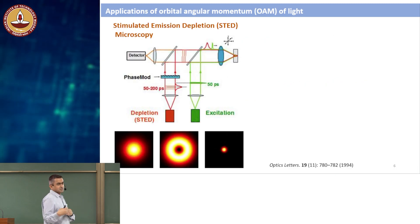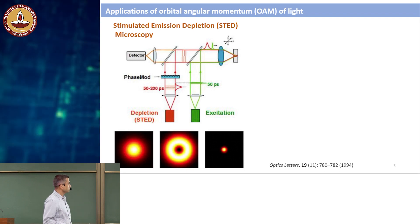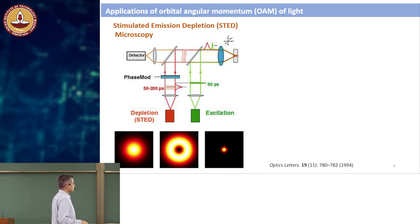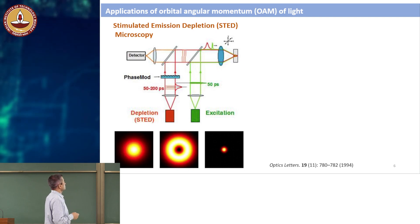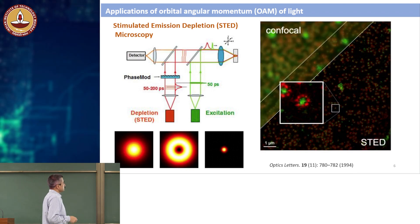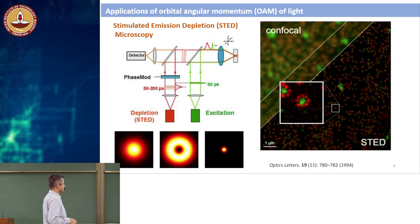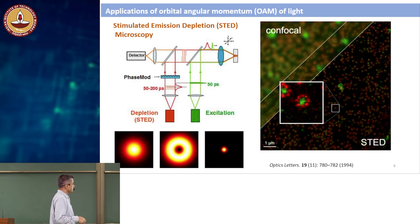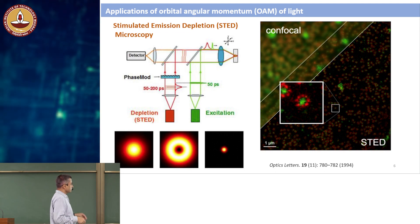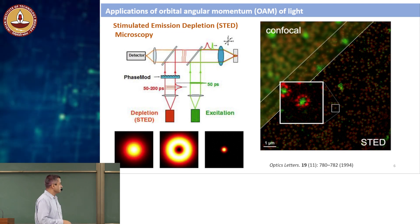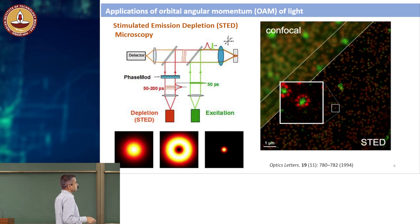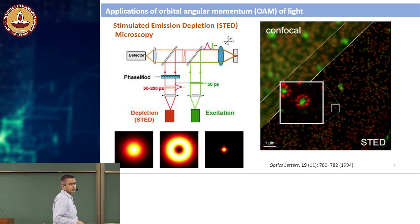Here are some applications of OAM. This 1994 result is STED microscopy — stimulated emission depletion microscopy. You have a fluorescent excitation laser in the form of a Gaussian mode and a depletion laser in the form of a Laguerre-Gaussian mode with darkness in the center. You excite then de-excite, so the effective excitation area is much smaller than the actual beam. This beats the diffraction limit — called super-resolution. Comparing confocal with STED shows a dramatic quality improvement. This even got the Nobel Prize about 12 years ago.